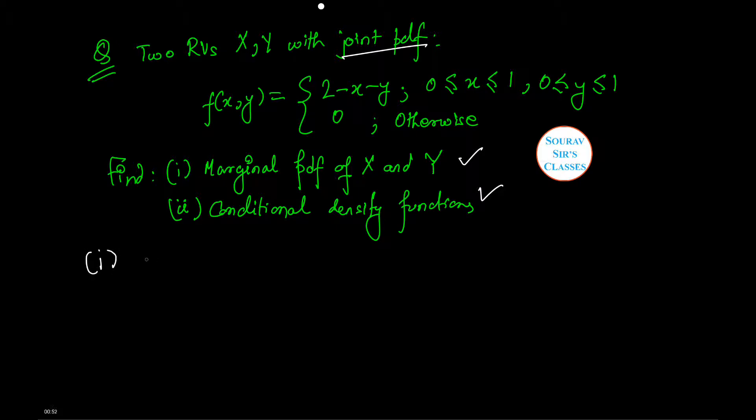Let us do number 1. fx into x is nothing but minus infinity to infinity f x comma y dy which is equal to 0 to 1, 2 minus x minus y dy which is equal to 3 by 2 minus of x.